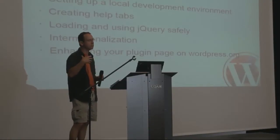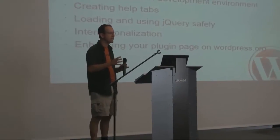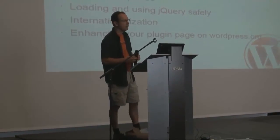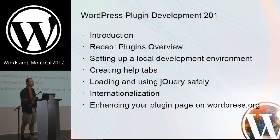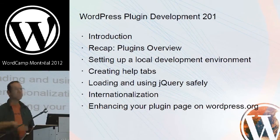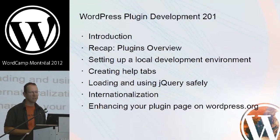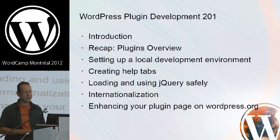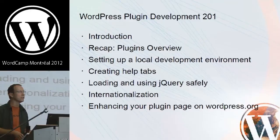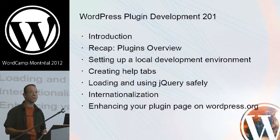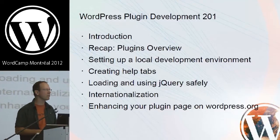First I want to talk about how do you set up a local development environment, so if you're going to make plugins, you can do all of your work on your own local machine. Then I'm going to talk about creating help tabs, jQuery — which can be both your friend and your enemy — internationalization, especially important here in Quebec, and finally enhancements you can do to your plugin page on WordPress.org, to make it nice and fancy like the new pages coming up over the last six months.